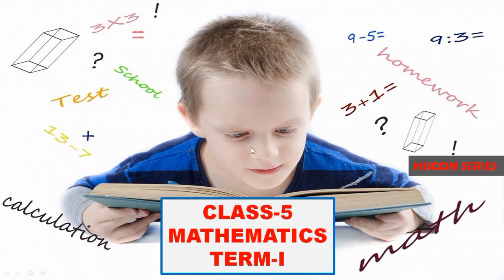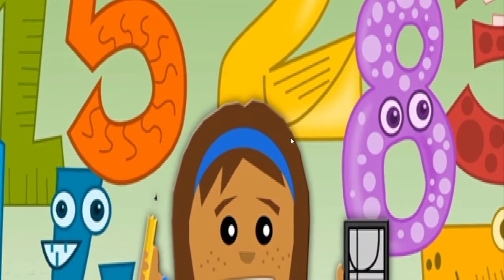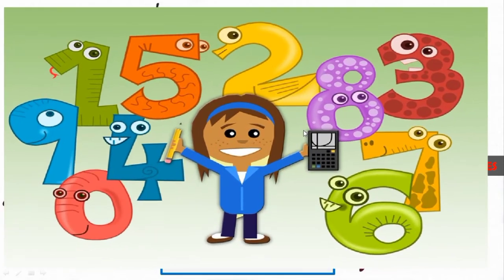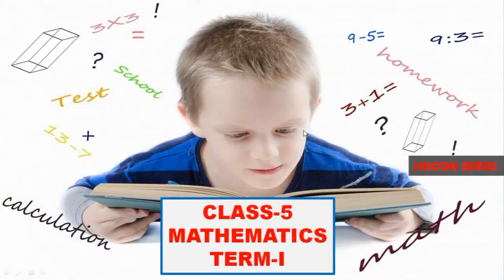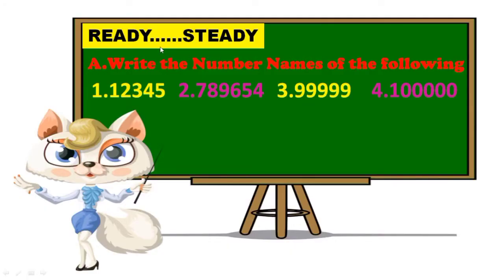See here the numbers. Write the number names of the following. The first one is 12,345. The second one is 7,089,654. Let's go to the third one: 99,999. The last one is 1 lakh.